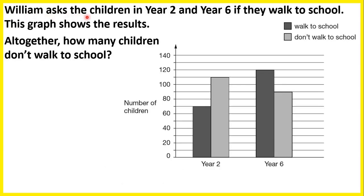William asks the children in year 2 and year 6 if they walk to school. This graph shows the results. Altogether, how many children don't walk to school?